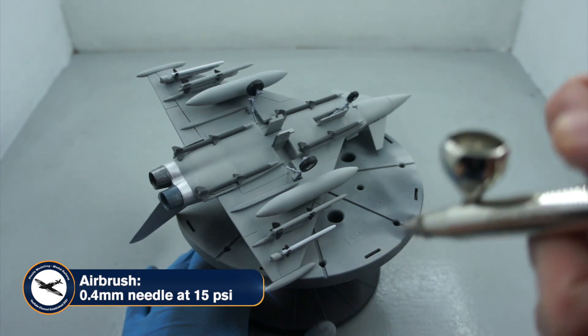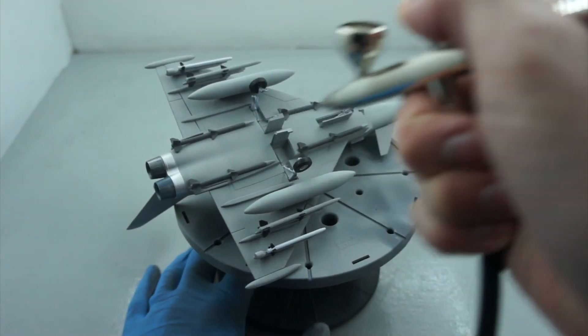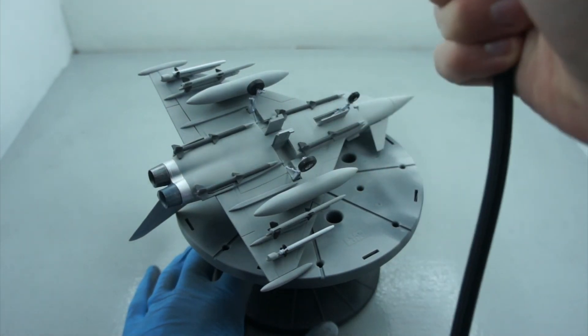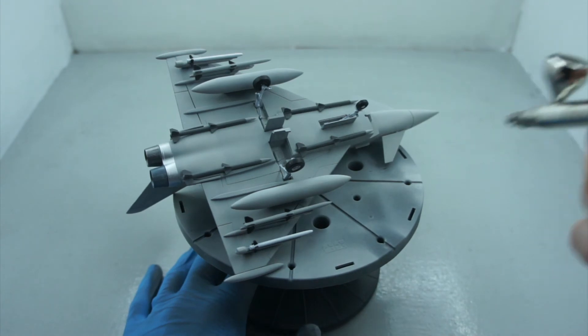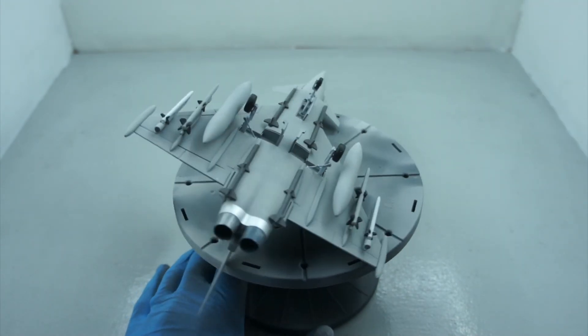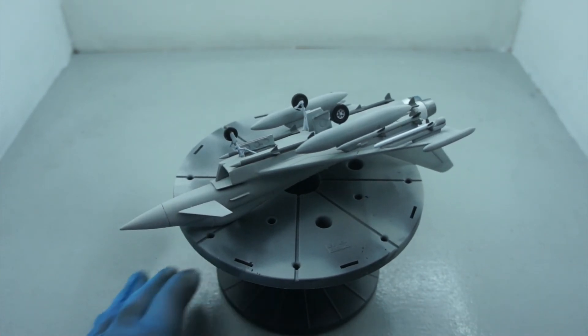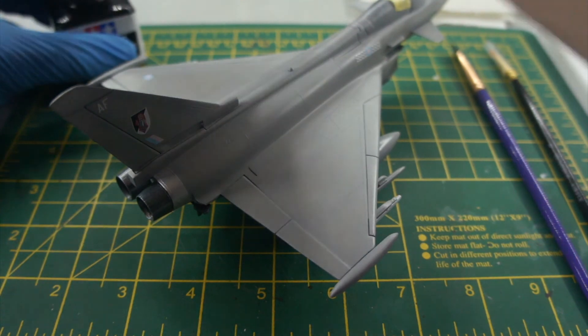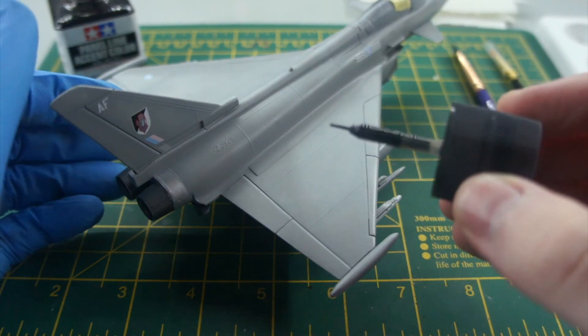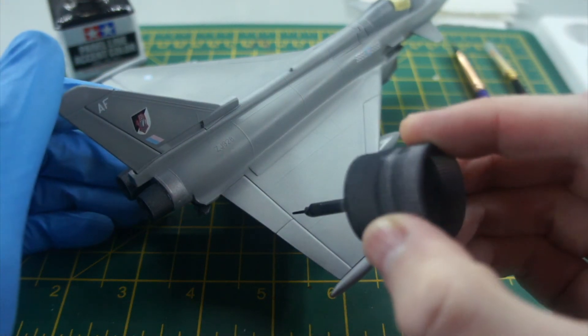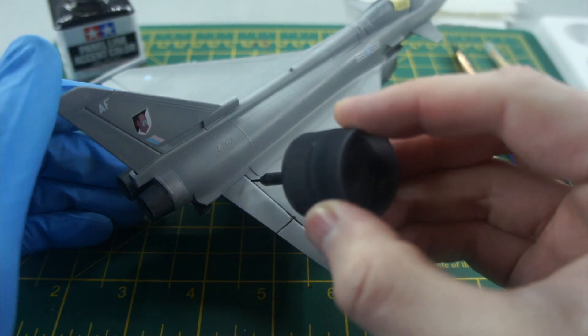Next it was to put down a clear coat of Tamiya X-22. Again, 0.4 millimeter needle at 15 PSI. I've been having problems with decaling recently on the last few models. For some reason, I've always had some silvering. So I really wanted to try something different this time. I put down a clear coat and was really satisfied. I didn't show it because I really wanted to concentrate on decaling, but I was very happy and had no silvering, you'll be happy to know.